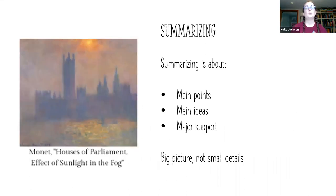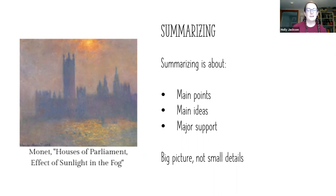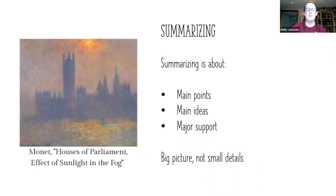Let's move on to summarizing. Summarizing is about main points, main ideas, and major support — it's all about the big picture and not the small details. Because I'm an art person, I'll compare this to an Impressionist painting: Monet's Houses of Parliament, Effect of Sunlight and Fog. Impressionist painting gives you the feel for something without going into all the tiny details — you get the impression without the details.